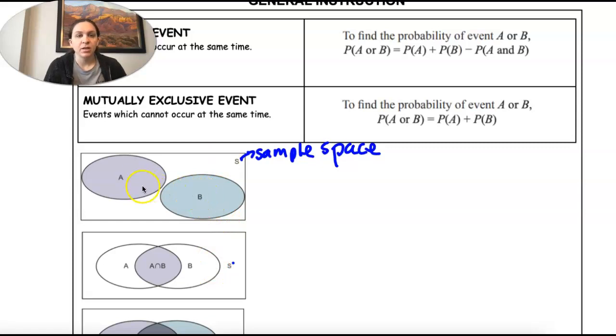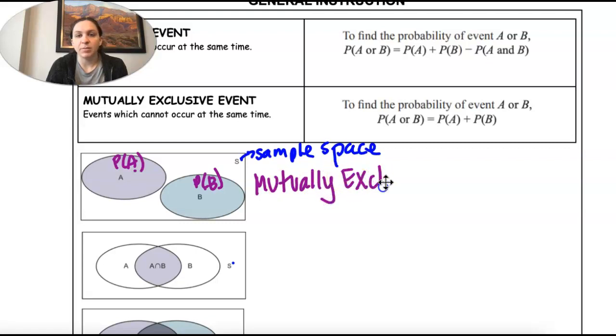So here I have A and B. Probability of A and probability of B. They're completely separate. We would call this mutually exclusive. There's no overlap. So we would just take probability of A plus the probability of B if we're looking at the or situation.